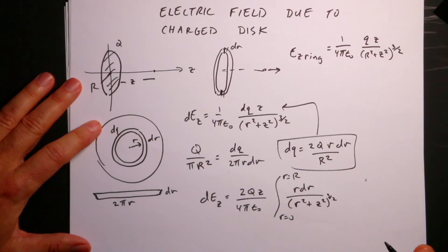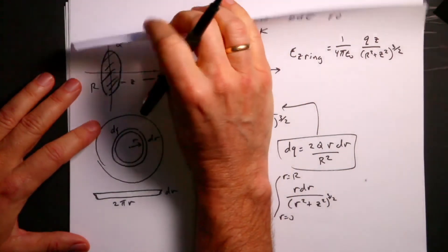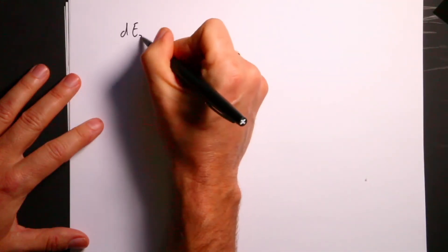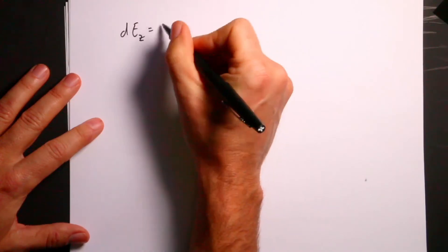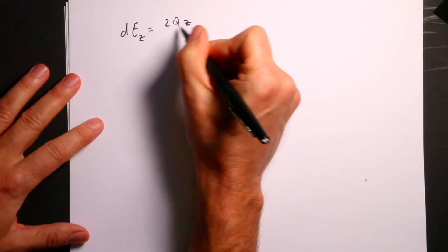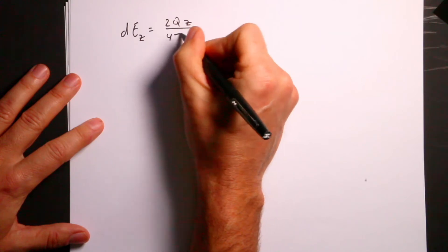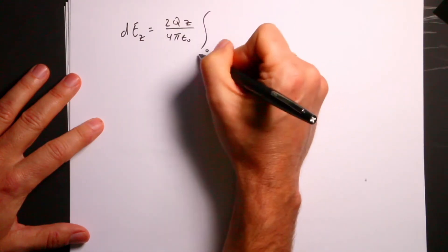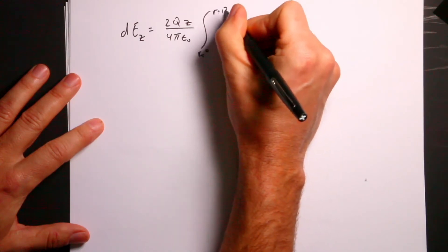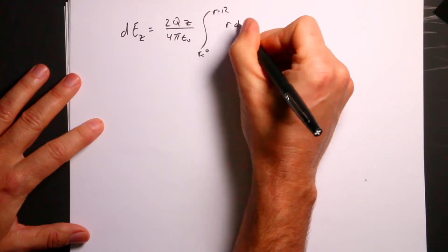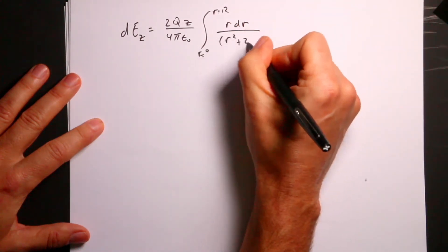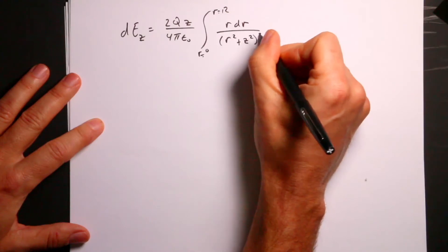That's my integral. Now I need to integrate it — and it's not too bad if you practice your integration. Let me rewrite this: the integral from r equals zero to R of r·dr over (r squared plus Z squared) to the three halves.